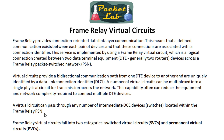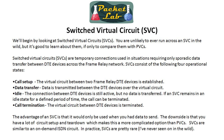Frame relay circuits fall into two categories: switched virtual circuits or SVCs, and permanent virtual circuits or PVCs. You're highly unlikely to ever run across an SVC in the wild, but it's good to understand the differences. SVCs are basically temporary connections used when you're only going to be sending sporadic data transfers between two routers. There are four operational states: call setup, data transfer, idle, and call termination — familiar to anyone who has studied ISDN.